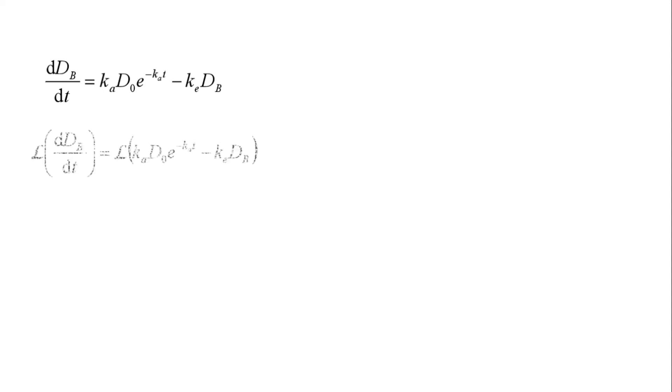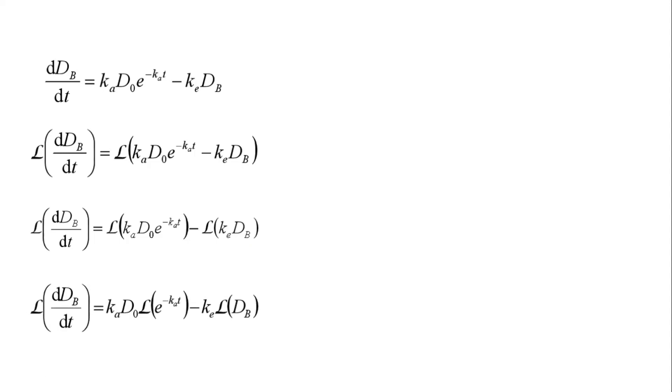We can get rid of that last compartment because we want to figure out how DB changes over time. I'm going to do a little bit of fancy math. The fancy L you see there is called a Laplace transform, and you can do a Laplace transform on both sides, and this will help us with solving this differential equation. The Laplace transform is a linear function, which means that because you have two terms here, you can separate that out into two Laplace transform terms. Because the Laplace transform is a linear function, you can take these constants and bring them out to the front of the Laplace transform. Similarly for ke, you can also move ke out to the front because it's a constant.